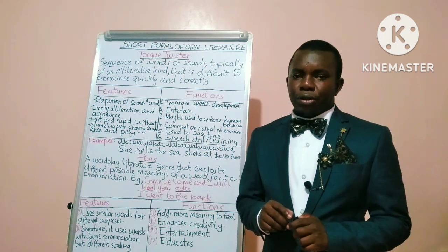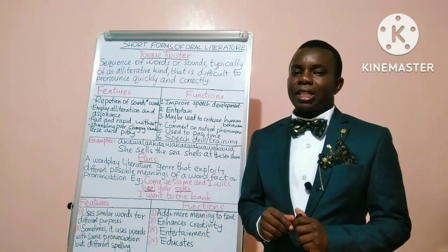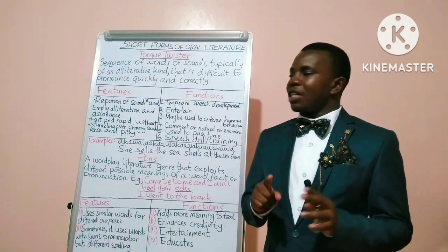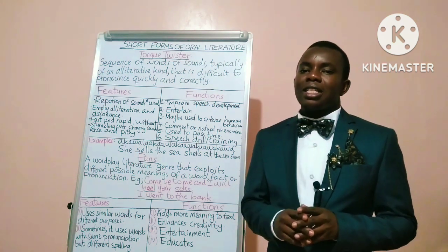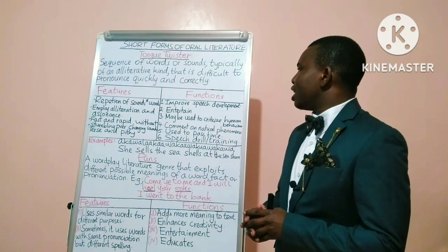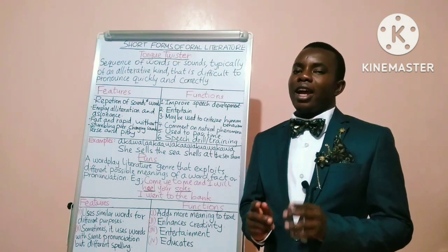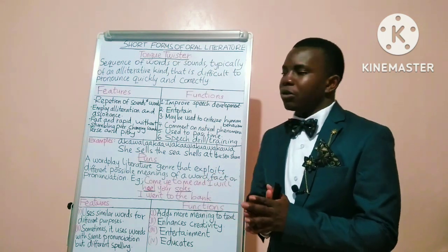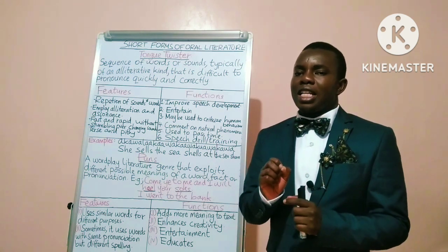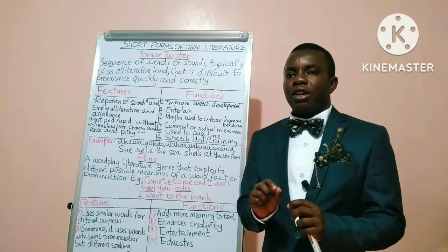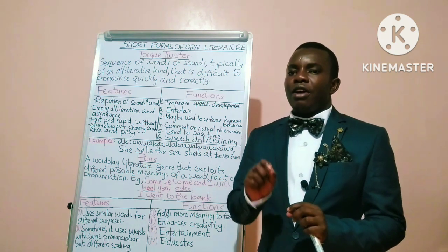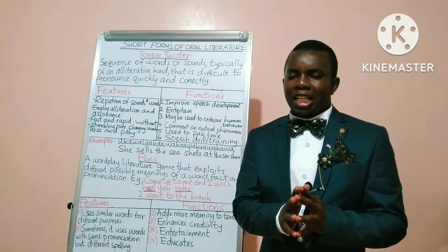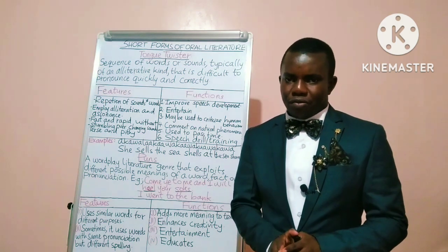We are going to first define what a tongue twister is. A tongue twister is a sequence of words or sounds that is typically alliterative and that is difficult to pronounce quickly and correctly. When we say the sequence of words or sounds are alliterative, we mean that the initial consonant sounds in the various words appearing on that line are the same.